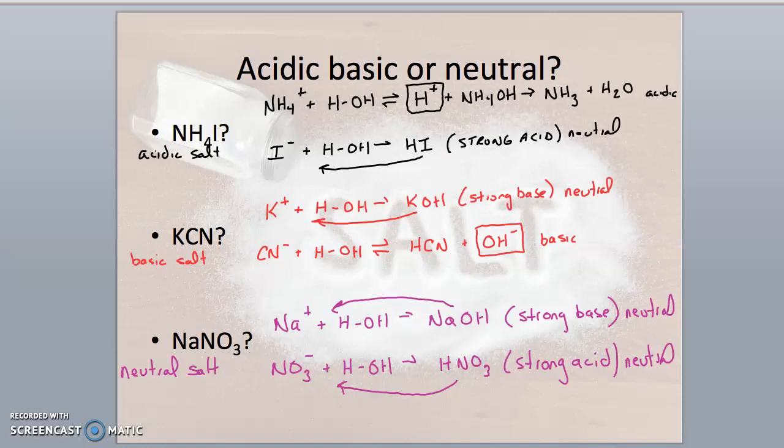The results are written under each salt. The reaction of each ion with water is shown for each. Notice in the first example, we formed ammonium hydroxide along with the hydrogen ion. Ammonium hydroxide is one of the compounds that decomposes very quickly to form ammonia and water, so the products for this reaction would be the hydronium ion, ammonia, and water. The presence of the hydronium ion is what makes this an acidic salt.